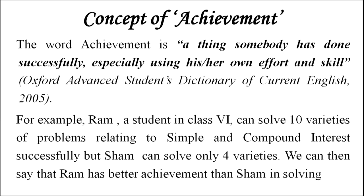What is achievement? The word achievement is a thing somebody has done successfully, especially using his or her own effort and skill. This definition is given by the Oxford Advanced Student's Dictionary of Current English in 2005.